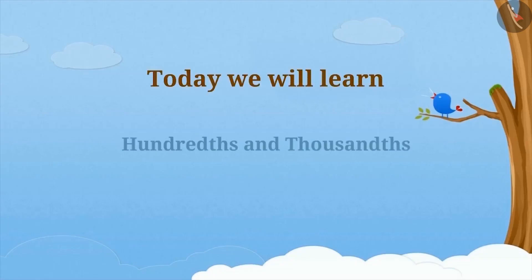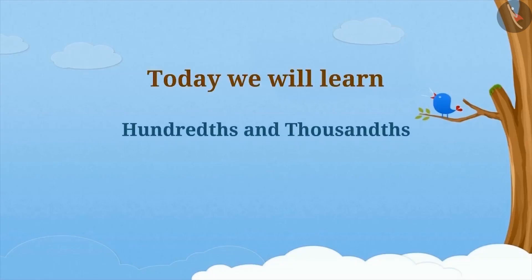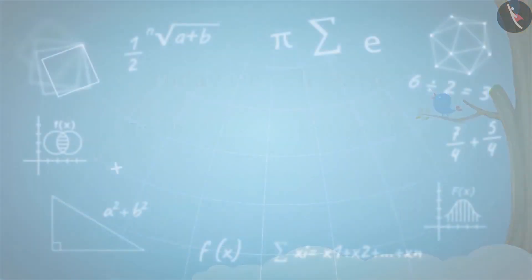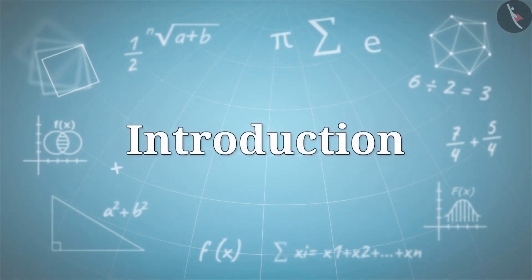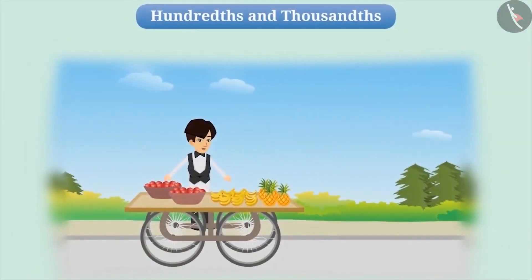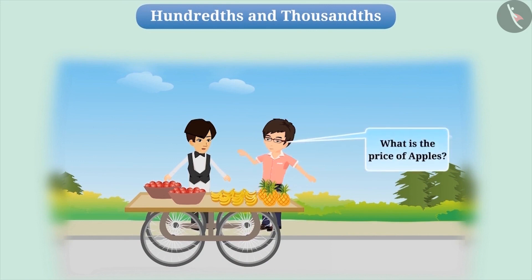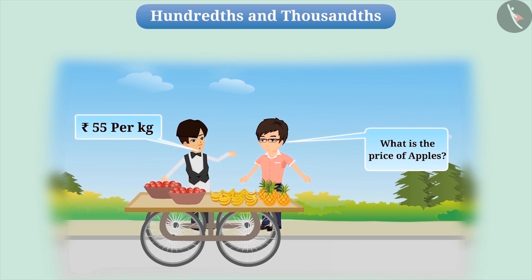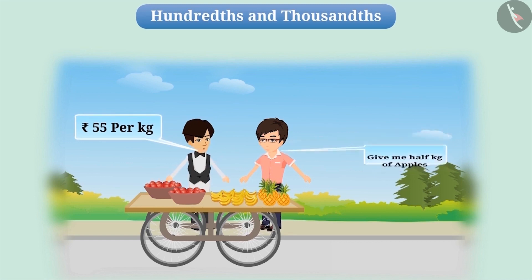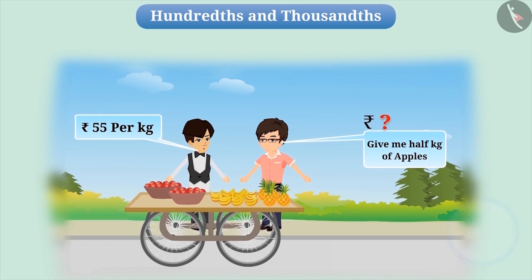Today, we will learn about hundreds and thousands. Rahul saw a fruit seller selling fruits. After seeing the fresh apples he was selling, Rahul was tempted to buy. He asked the seller about the price of the apples. The fruit seller said it was 55 rupees per kg. If Rahul buys half a kg of apples, then how much money would he have to pay the fruit seller?